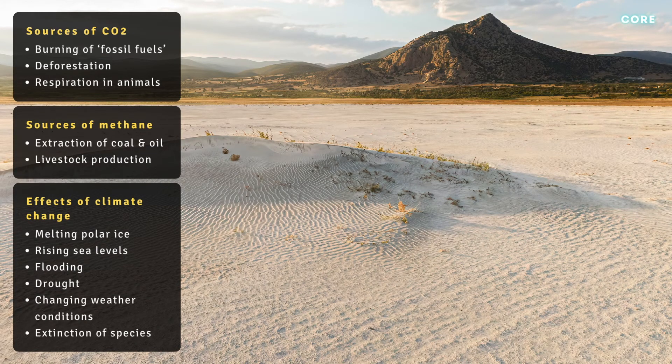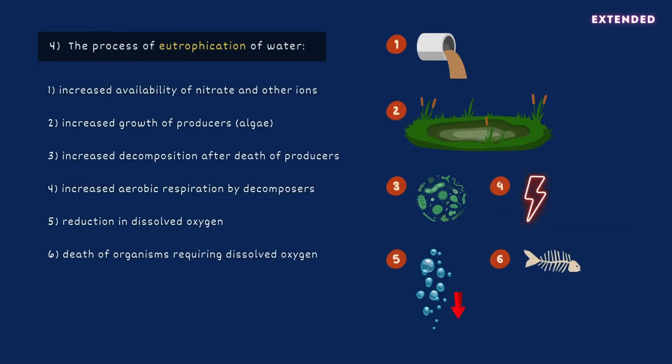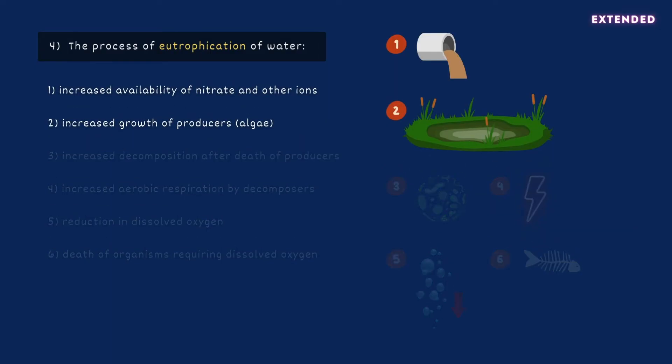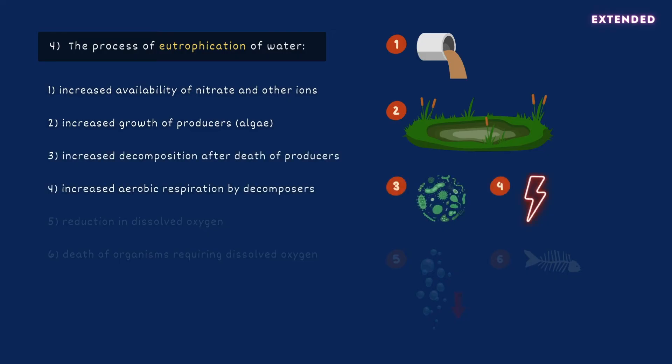That's everything you need to know for core, but for extended you also need to explain the process of eutrophication. Eutrophication occurs when a body of water becomes enriched with nutrients, usually from agricultural runoff or sewage outflows. The excess of nitrates and other ions in the water leads to an overgrowth of algae, which eventually die and sink to the bottom of the river or lake.